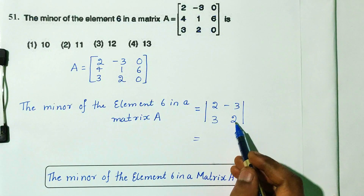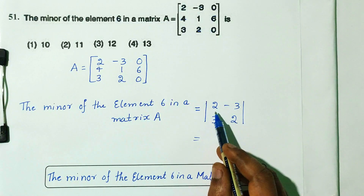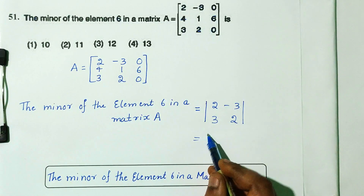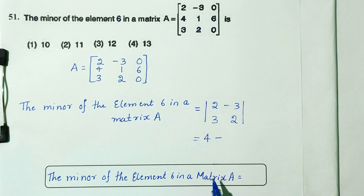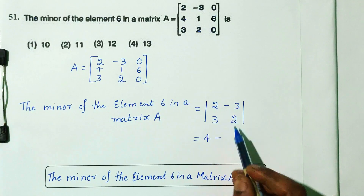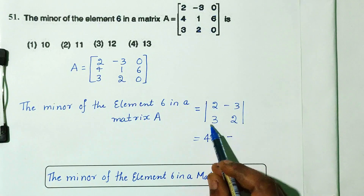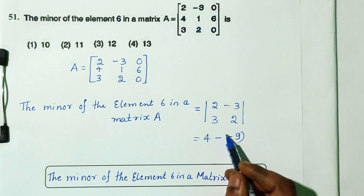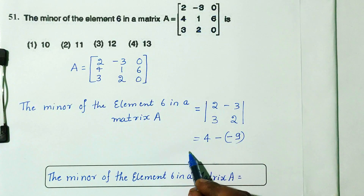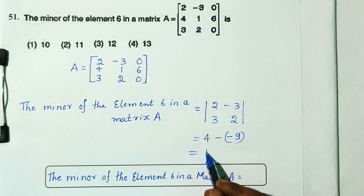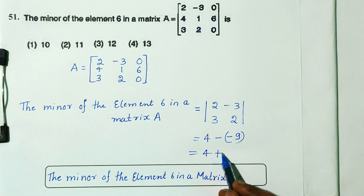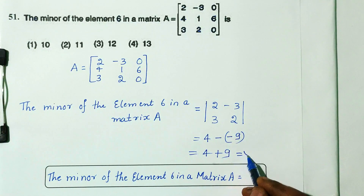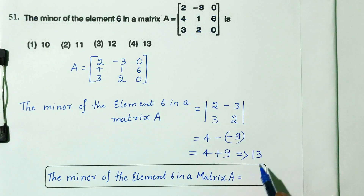So first, the principal diagonal elements: 2 into 2 is equal to 4. As per the formula, minus the remaining elements: plus into minus is minus, so minus 3 into 3 is 9. Minus of minus 9 gives plus 9. So 4 plus 9 is equal to 13.